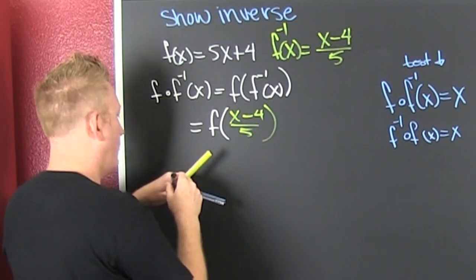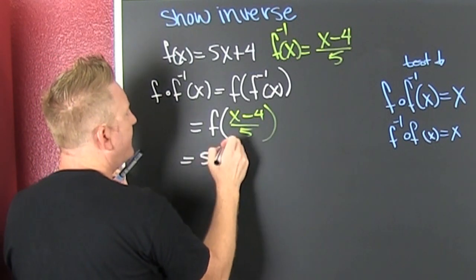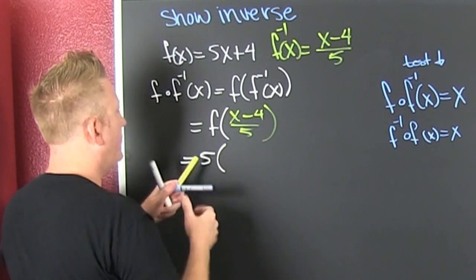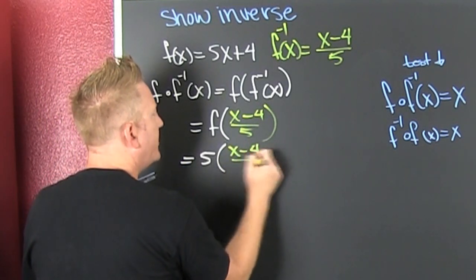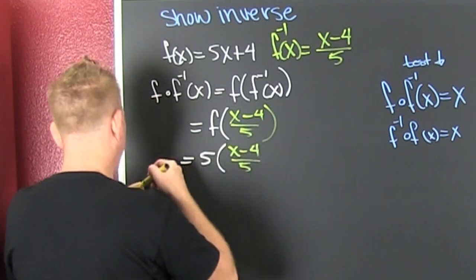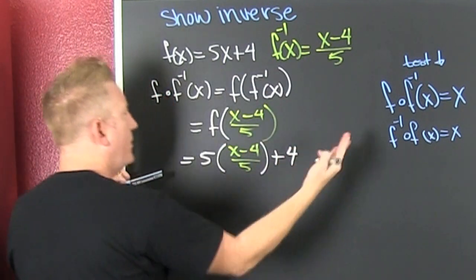That should have been white, but that's 5 times, wait for it, all that yellow stuff, (x minus 4) divided by 5, and then I'm still gonna add that 4 to it. When I compose the two, now what we see, these fives reduce.